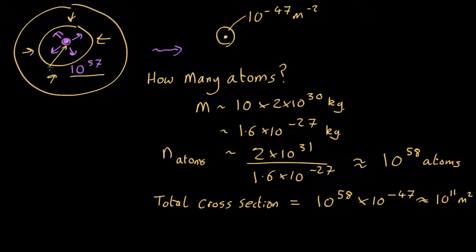So if it's about a thousand kilometers out, it's approximated as being a shell that distance out, made of all these 10 to the 58 atoms. And each atom has its little cross-section. So there's a total cross-sectional area of 10 to the 11 square meters.